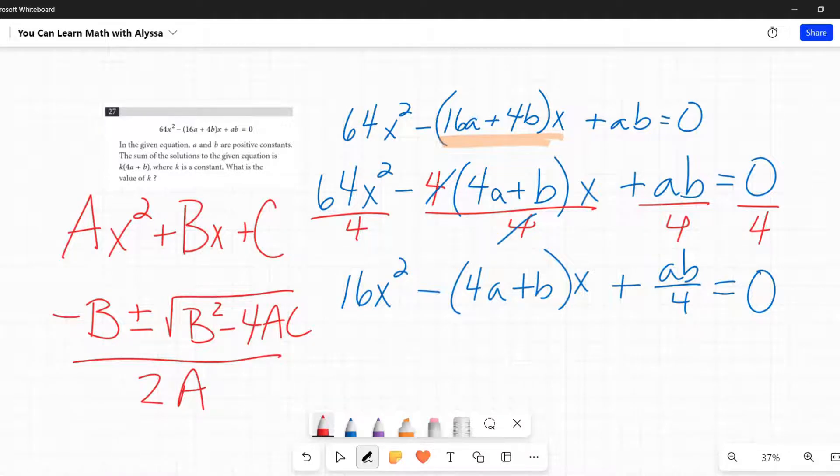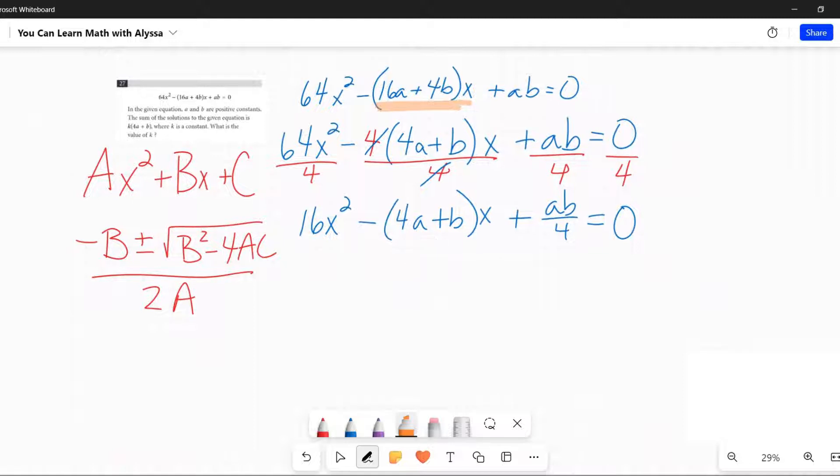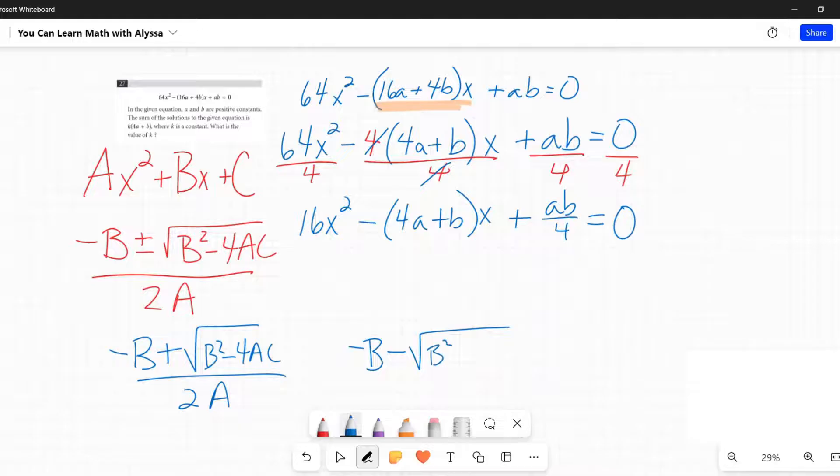Now that plus or minus represents the two answers, so one solution to any quadratic equation would be -B + √(B² - 4AC) all over 2A, and the other would be -B - √(B² - 4AC) all over 2A. So our goal, remember, is the sum of the solutions, adding them together.